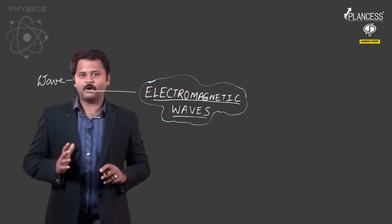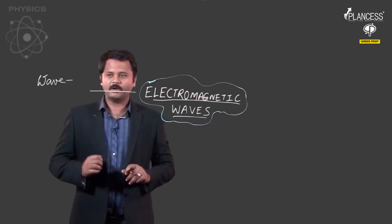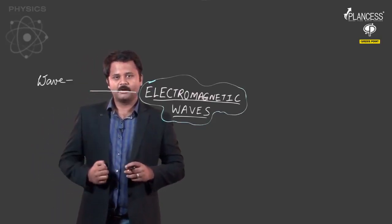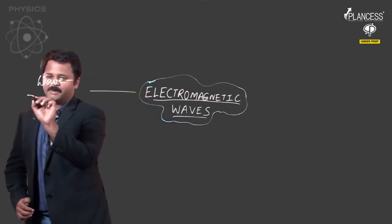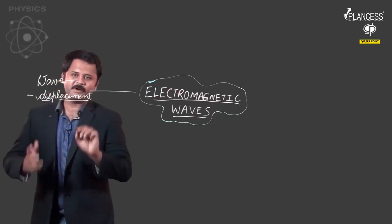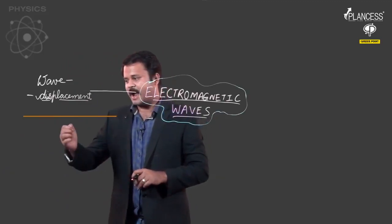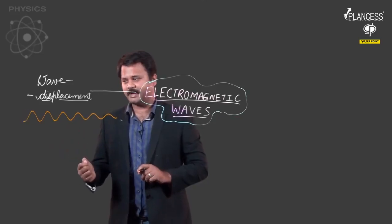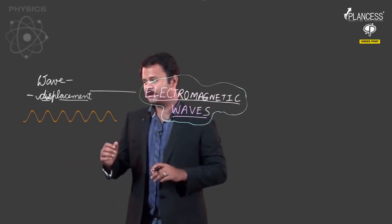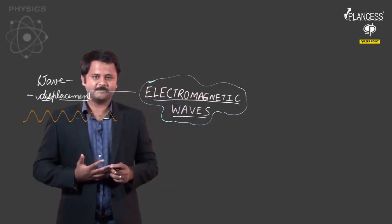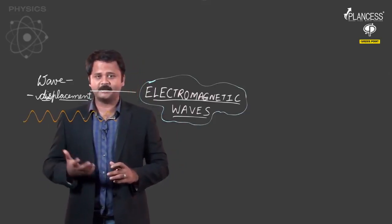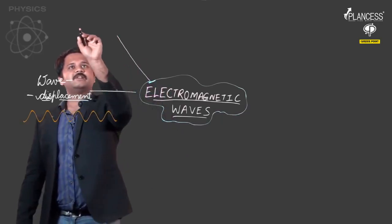A wave is nothing but a disturbance that is traveling across space and also varying with time. We also studied one particular example called the displacement wave. Here we have a string, and if we provide some disturbance at one end of the string, this disturbance travels across the length of the string. This is the general notion of a wave. However, if we want to study it scientifically, we need to derive the equation governing this kind of motion. The next thing we are going to study is the equation of a wave.